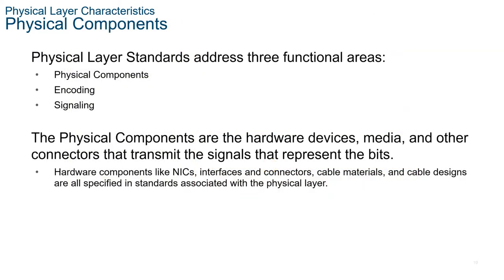The physical layer standards address three functional areas: physical components, encoding, and signaling. Physical components are the electronic hardware devices, media, and connectors that transmit the signals and represent the bits. Hardware components such as NICs (network interface cards), interfaces, connectors, cable materials, and cable designs are all specified in the standards associated with the physical layer.